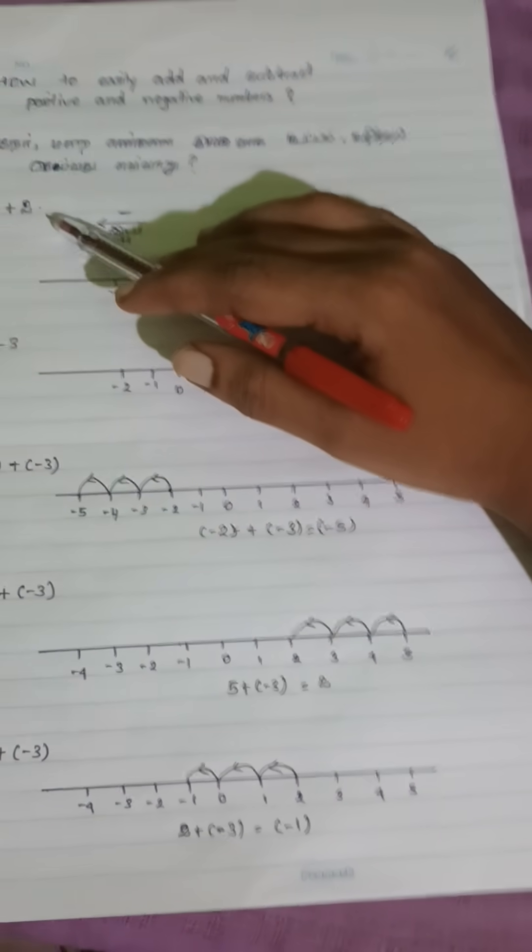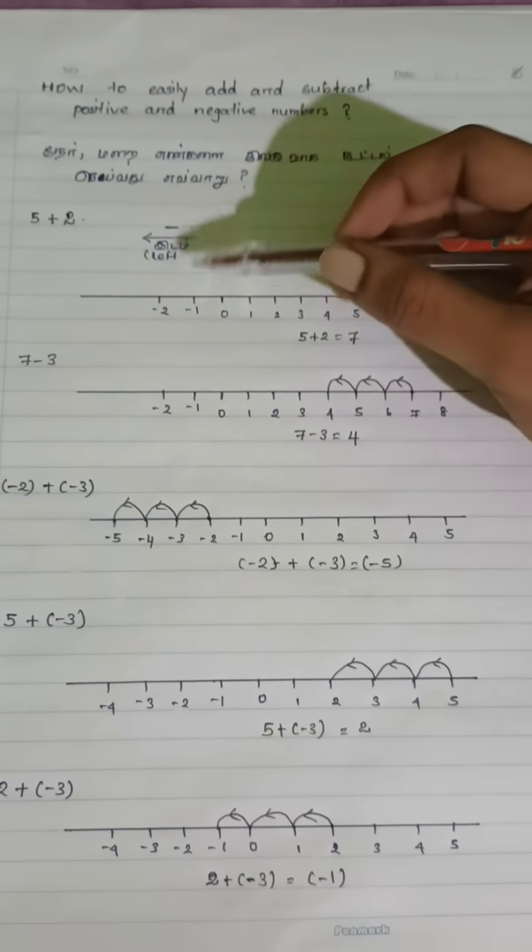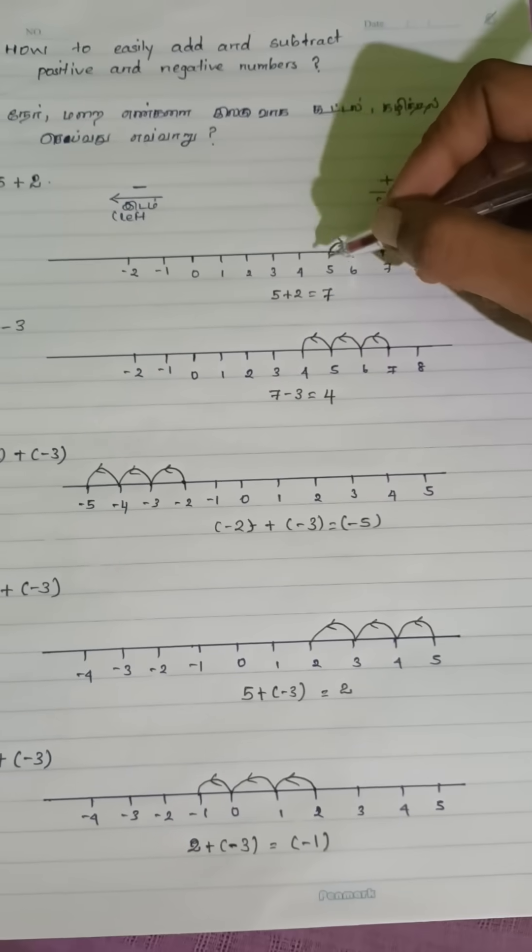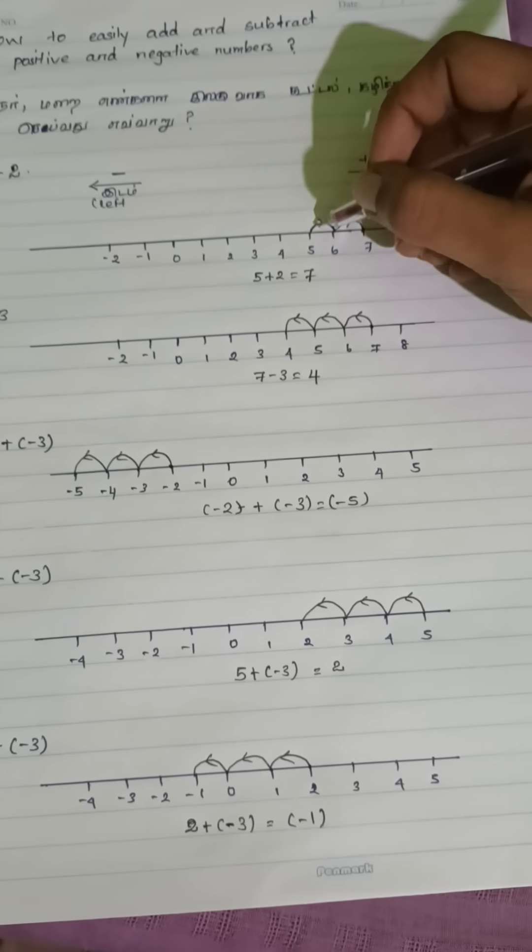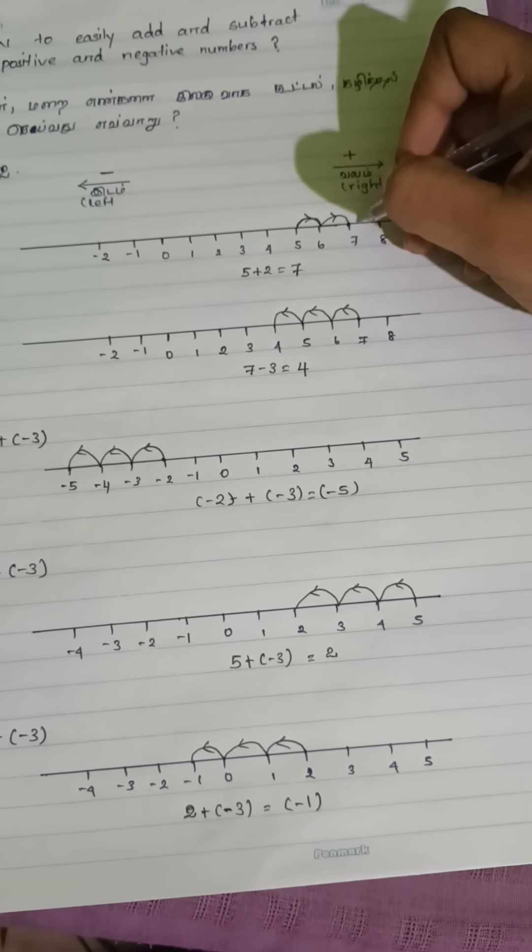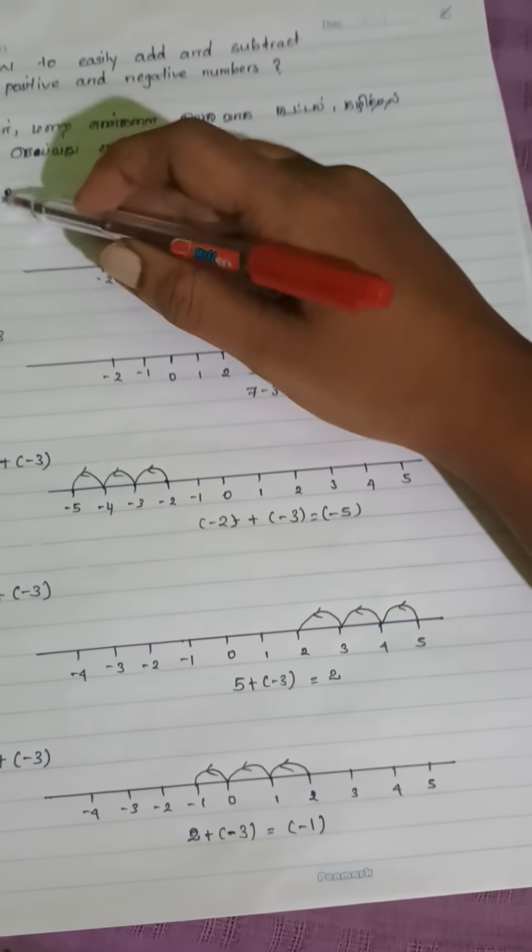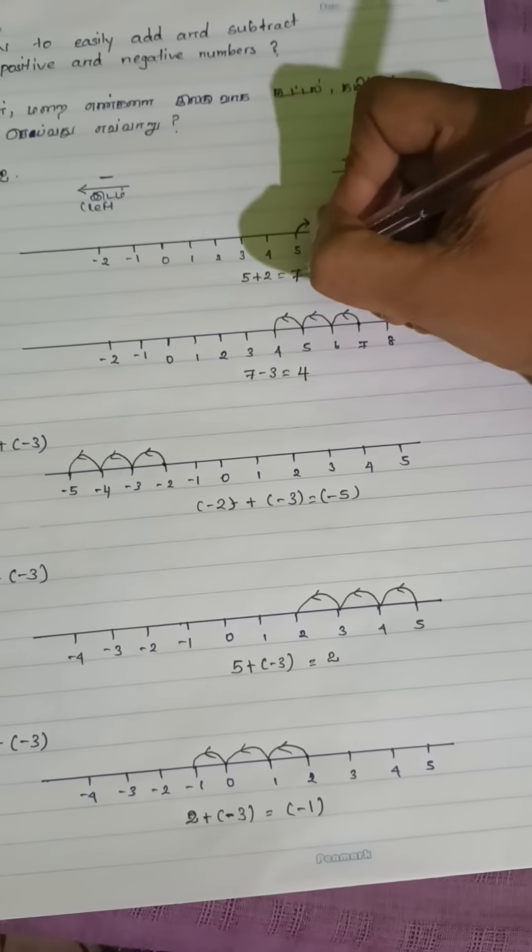First example, 5 plus 2. Start at 5 on the number line and then move 2 steps to the right direction because it's plus 2. You land on 7. 5 plus 2 equals 7.